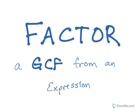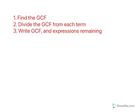We're now going to factor a GCF from an expression, remembering that GCF stands for greatest common factor. So our steps: the first thing we're going to do is find the greatest common factor, then we're going to divide that from each term, and then we're going to rewrite this. So we're almost like we are undistributing. That is the idea of factoring out a greatest common factor.